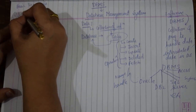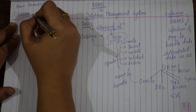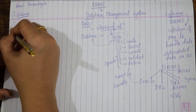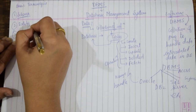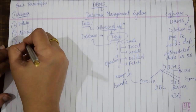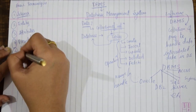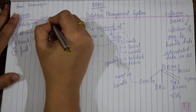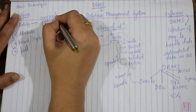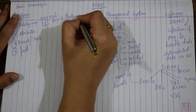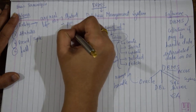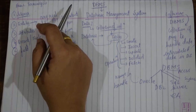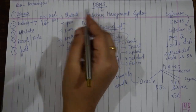The first terminology is schema — another name for database. A database is also called a schema. Next is entity. An entity is any real-life object. It can be a student, a pen, a fan, a book, a table, etc. So anything or any object is an entity.